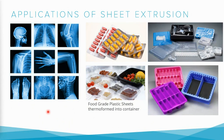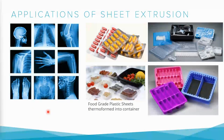X-ray film is simply a plastic material coated on both sides with a light-sensitive silver emulsion. Because of the silver emulsion, we get imprints of those areas where X-ray light is unable to pass.